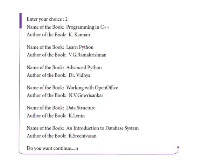Now we select choice 2 to display. Enter your choice — 2. Now we can see the name and author of each book listed line by line: first is 'Programming in C++', next is 'Learn Python' with its author, and so on.